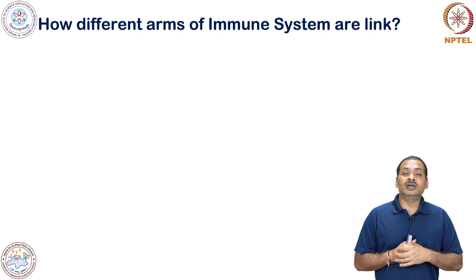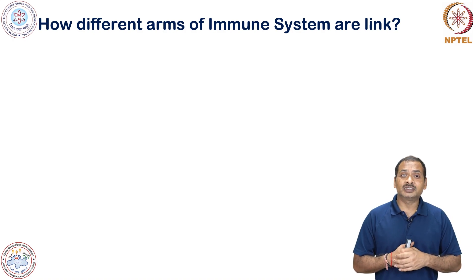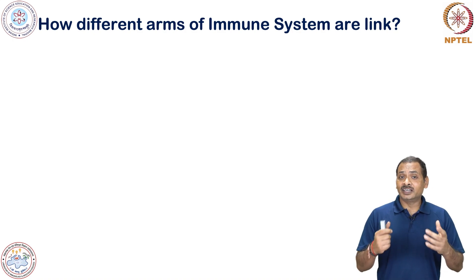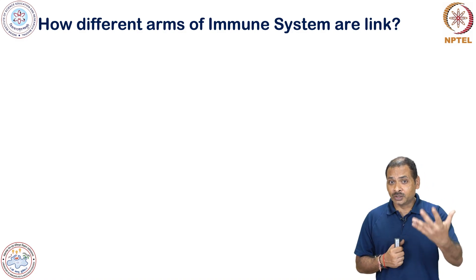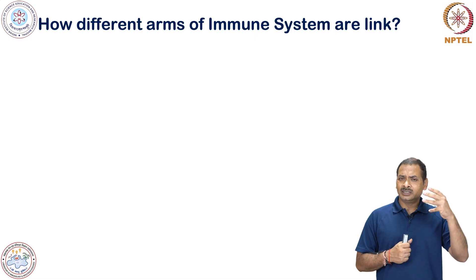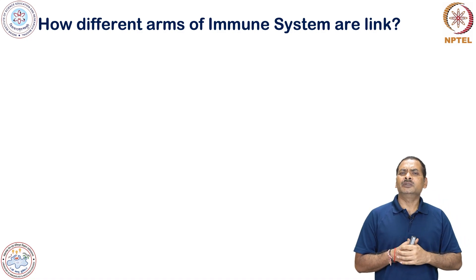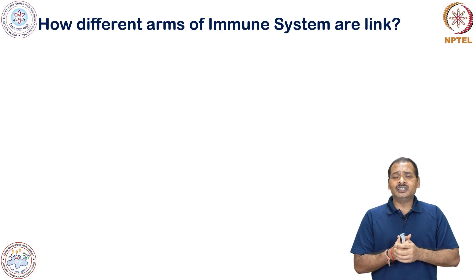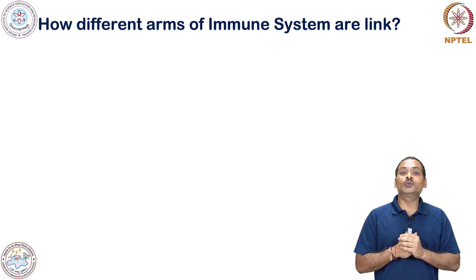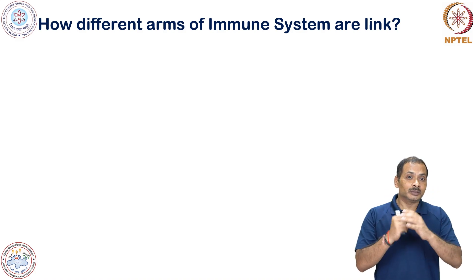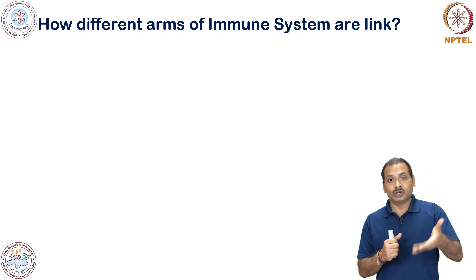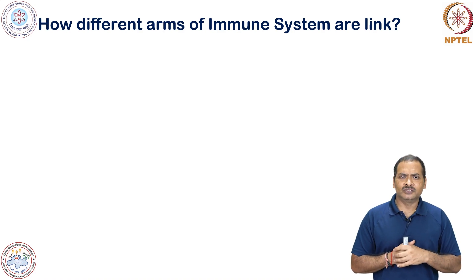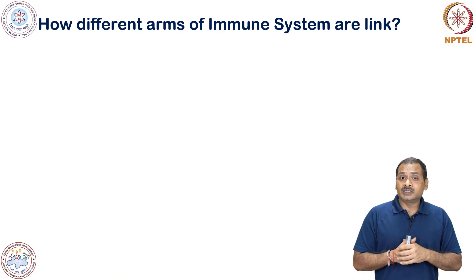Complement proteins are synthesized in the liver and act on microbial pathogens, inducing three kinds of immune responses. First, they get activated by a cascade of signaling, and towards the end they make a kind of hole in the pathogen. There will then be loss of ions and water, and finally the pathogen will die. We call this the membrane attack complex.